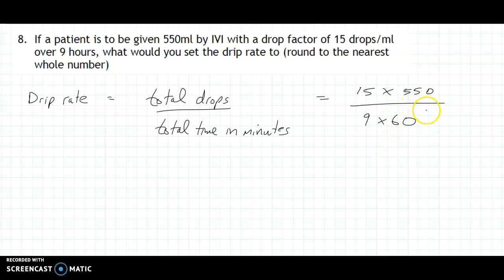And now we're set up and we can start cancelling. Divide by 10 above and below, and we could also divide by 3. 3 into 9 goes 3 times, 3 into 15 goes 5 times. So we're left with 5 times 55 on top and 3 multiplied by 6 below.